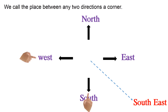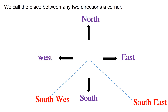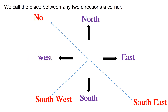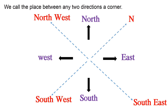Between South and West, the South-West corner is there. Similarly, between North and West, the North-West corner is there. Between North and East, one corner is there — that is the North-East corner. So, we have four directions and four corners.